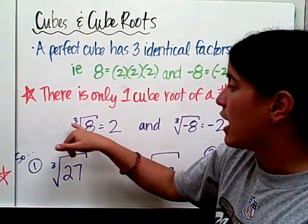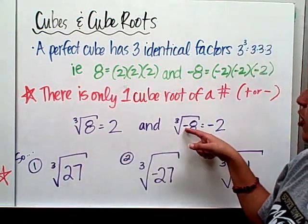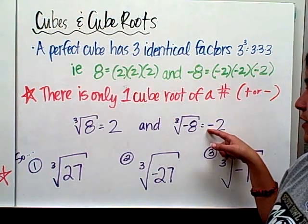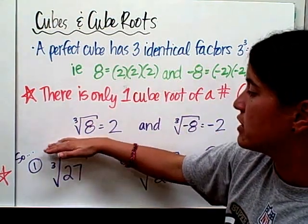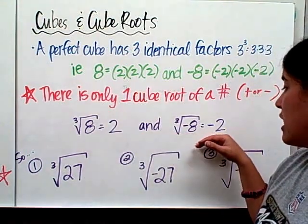So the cube root of 8, see how I have the little 3 there? The cube root of 8 is 2. And the cube root of negative 8 is negative 2. So that's how you're going to know the difference. The cube root of 8 is 2, and the cube root of negative 8 is negative 2.